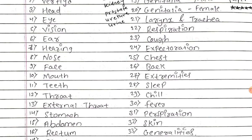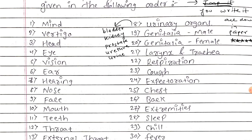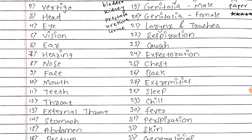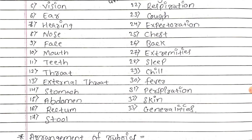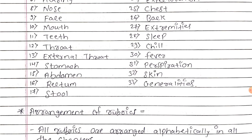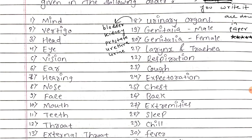The chapters in order are: 1st Mind, 2nd Vertigo, 3rd Head, 4th Eye, 5th Vision, 6th Ear, 7th Hearing, 8th Nose, 9th Face, 10th Mouth, 11th Teeth, 12th Throat, 13th External Throat, 14th Stomach, 15th Abdomen, 16th Rectum, 17th Stool, and 18th Urinary Organs. The 18th chapter is further subdivided into five chapters: Bladder, Kidney, Prostate, Urethra, and Urine.